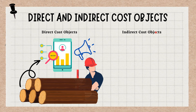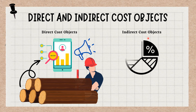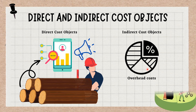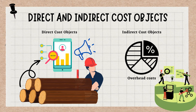Indirect cost objects, on the other hand, are expenses that cannot be directly attributed to a specific cost object. Instead, they are costs that are shared among multiple cost objects or activities. Indirect costs are often called overhead costs, and they include things like rent, utilities, insurance, and taxes. These costs are essential for the operation of the business but are not directly related to a specific product or service. Indirect costs are typically allocated to different cost objects using a cost allocation method, such as activity-based costing or job order costing.